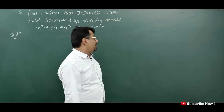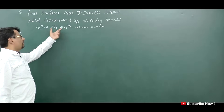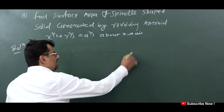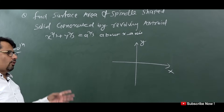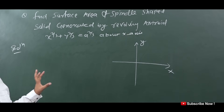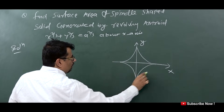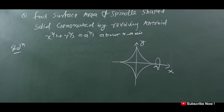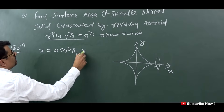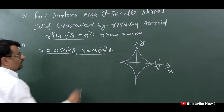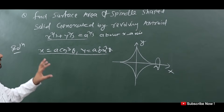Now one last question on this topic: find the surface area of the spindle-shaped solid generated by revolving the astroid x^(2/3) + y^(2/3) = a^(2/3) about the x-axis. I already showed you this curve's volume in the volume chapter. Today I'm teaching the surface area, which is important from the exam point of view. The shape of the astroid is like a four-pointed star. The parametric coordinates are x = a·cos³θ and y = a·sin³θ, which satisfy this equation.